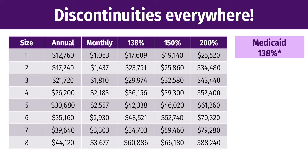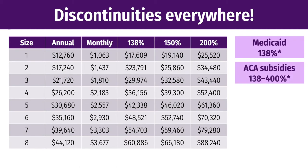Some states have expanded Medicaid up to 138% — prior to the Affordable Care Act it was 100% of the poverty line. The ACA subsidies for health insurance are available between 138% and 400% of the poverty level. If you're above 400%, you get no subsidies. But in states that haven't expanded Medicaid, there's a coverage gap: if you're at 110% of the poverty level, you don't qualify for Medicaid and you're also below 138% for ACA subsidies, so you have to pay full price for insurance.